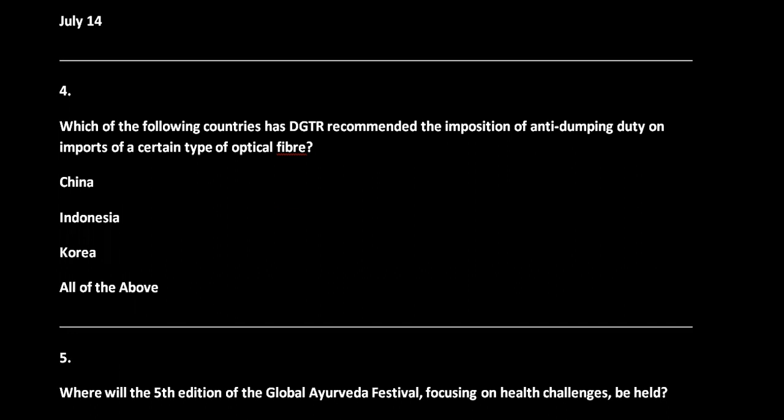Question 4: Which of the following countries has DGTR recommended the imposition of anti-dumping duty on imports of a certain type of optical fiber? Options are China, Indonesia, Korea, and None of these. The correct answer is option D, that is None of these, because the Directorate General of Trade Remedies under the Ministry of Commerce recommended anti-dumping duty on China, Korea, and Indonesia — meaning all three are included.